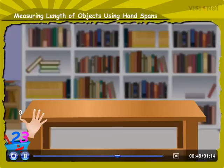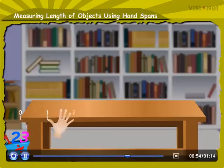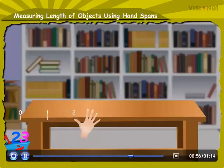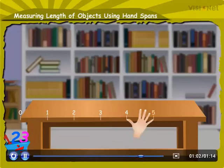Now, mark this point as 1, like this. Stretch the fingers again and repeat this process until you reach the end of the table, and keep counting the number of hand spans.